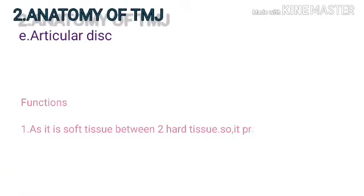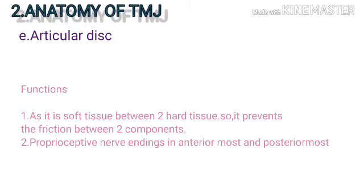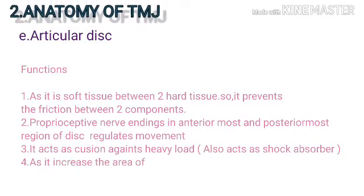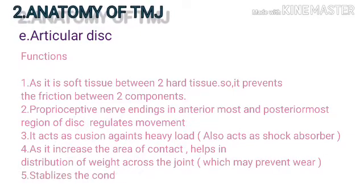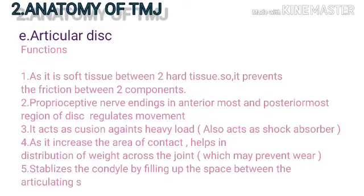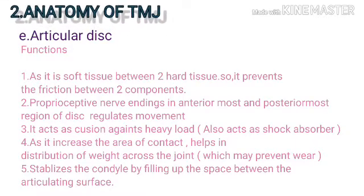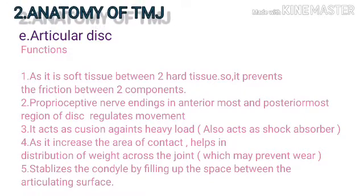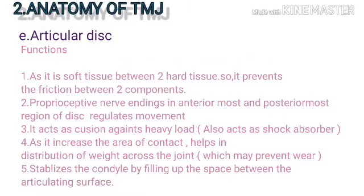Functions of the articular disc: as soft tissue between two hard tissues, it prevents friction between the components. Proprioceptive nerve endings in the anteriormost and posteriormost regions regulate movement. It acts as a cushion against heavy loads and as a shock absorber, increasing the area of contact and helping distribute weight across the joint to prevent wear. It also stabilizes the condyle by filling the space between articular surfaces.